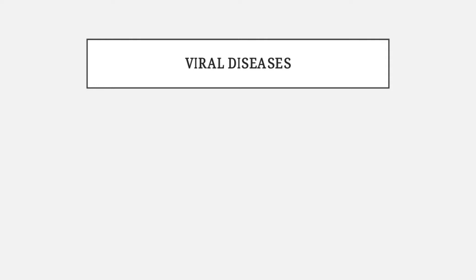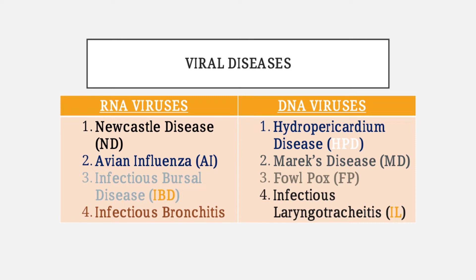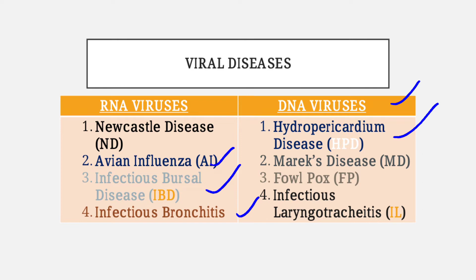In this first segment we discuss viral diseases most commonly occurring in poultry flocks. There are two major categories: RNA virus families and DNA viruses. Among RNA viruses: Newcastle disease virus, avian influenza virus, infectious bursal disease, and infectious bronchitis. Among DNA viruses: hydropericardium syndrome, Marek's disease, fowl pox, and infectious laryngotracheitis.